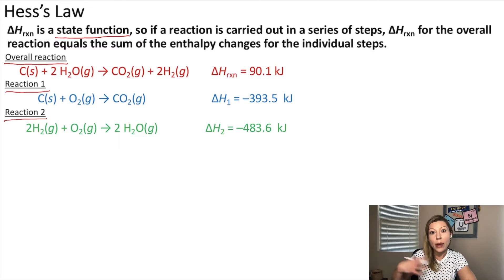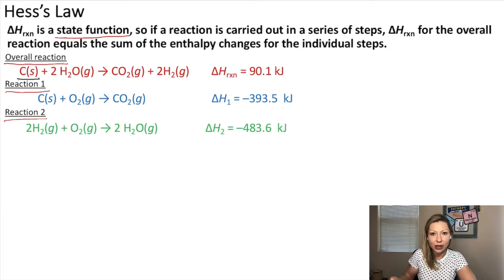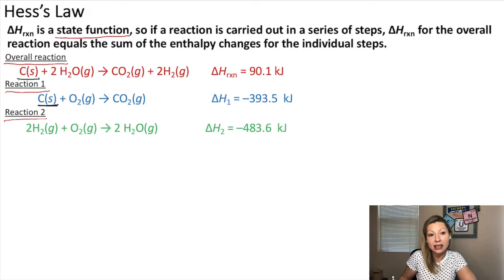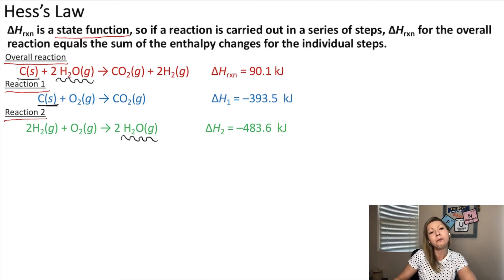Let's try to perform this overall reaction using two other reactions: reaction one, where carbon plus oxygen gas forms CO₂, and reaction two, where two moles of hydrogen gas reacts with oxygen gas forming water. When working on these types of problems, you first want to look at the reactants and products in the overall reaction. Our first reactant is solid carbon — and we do have solid carbon in reaction one.